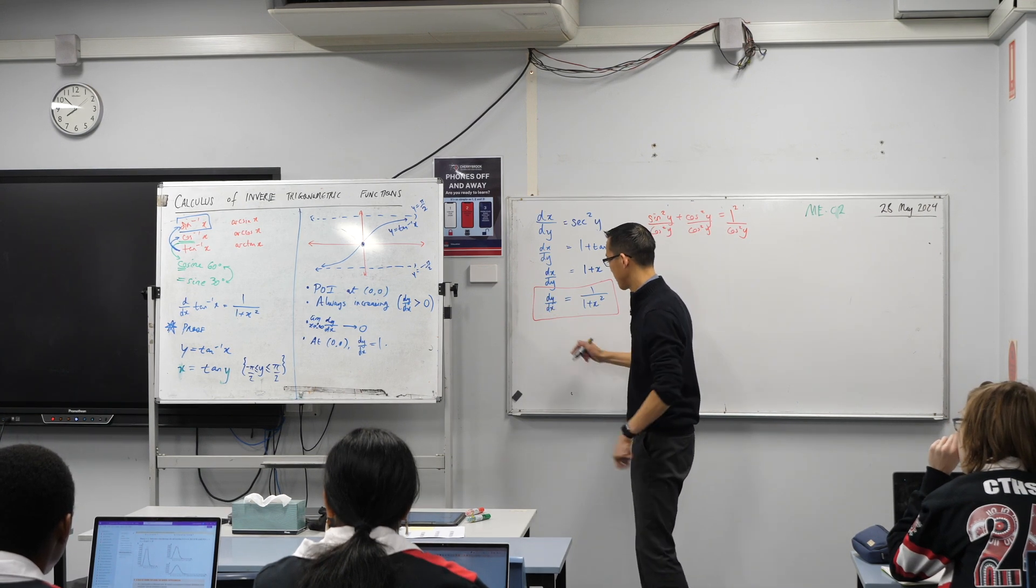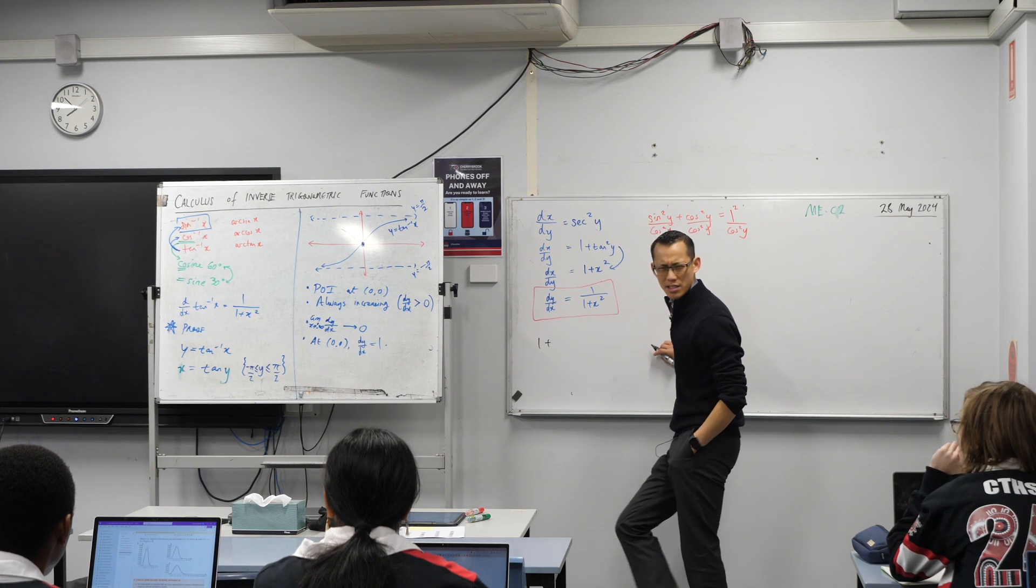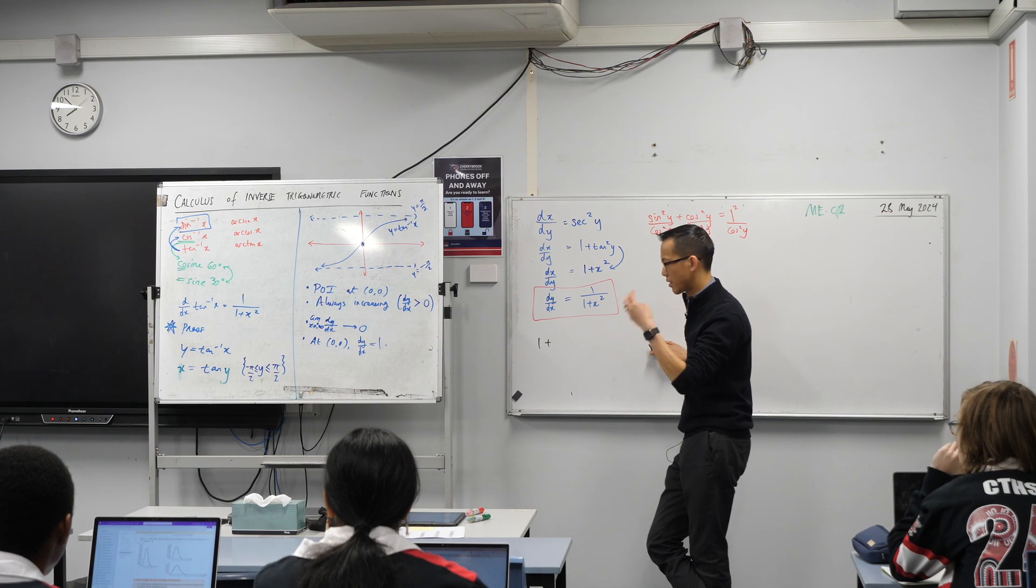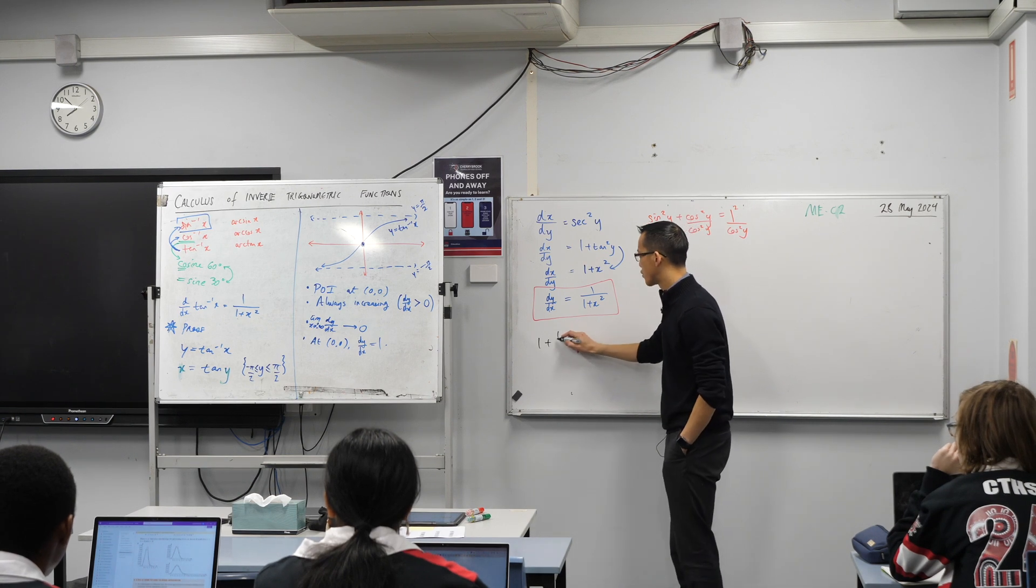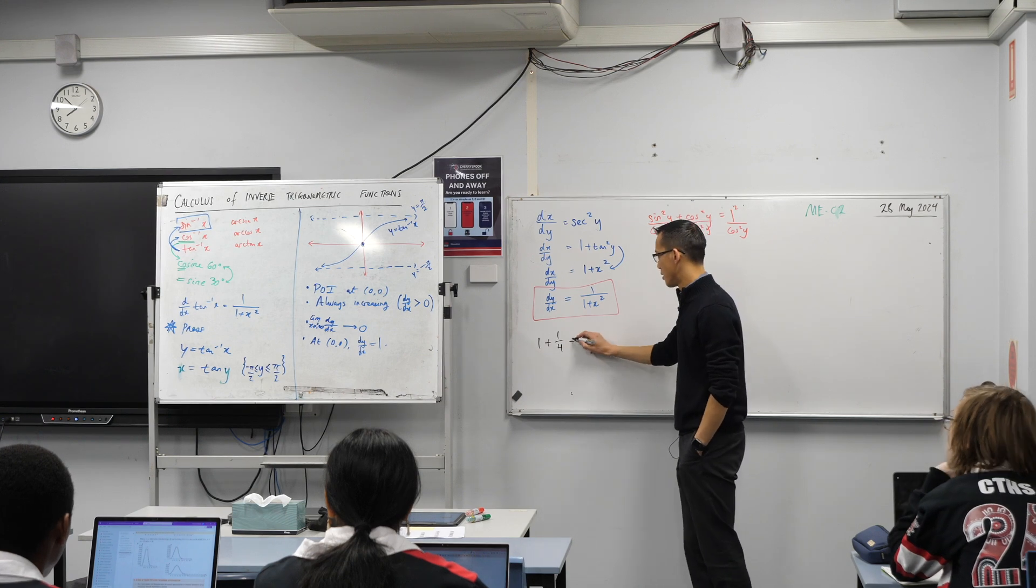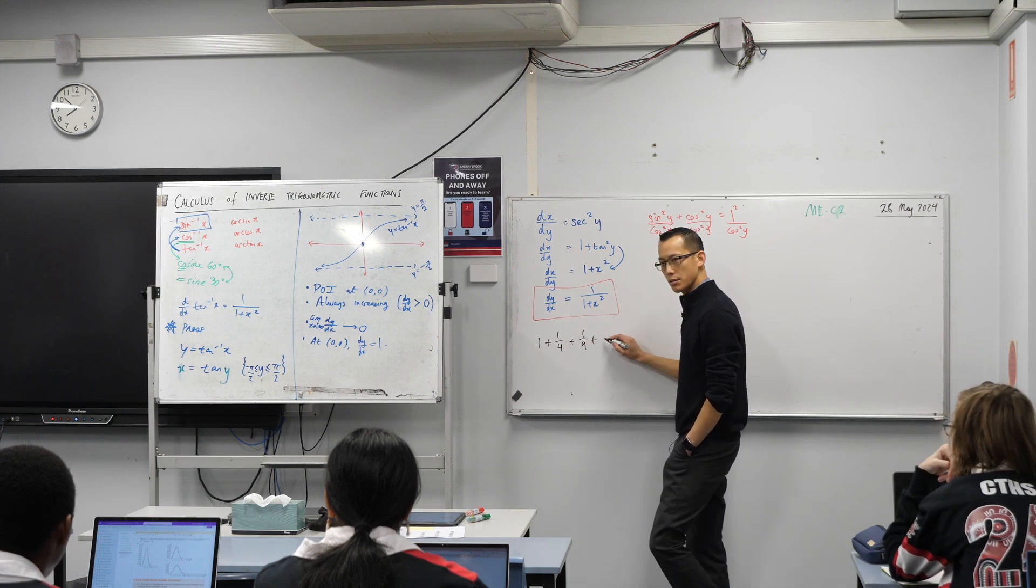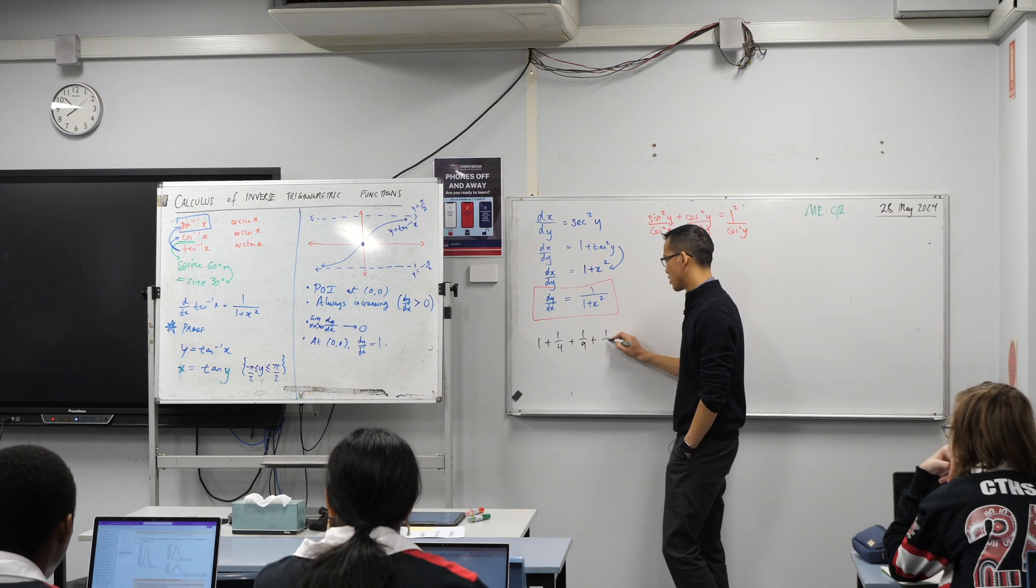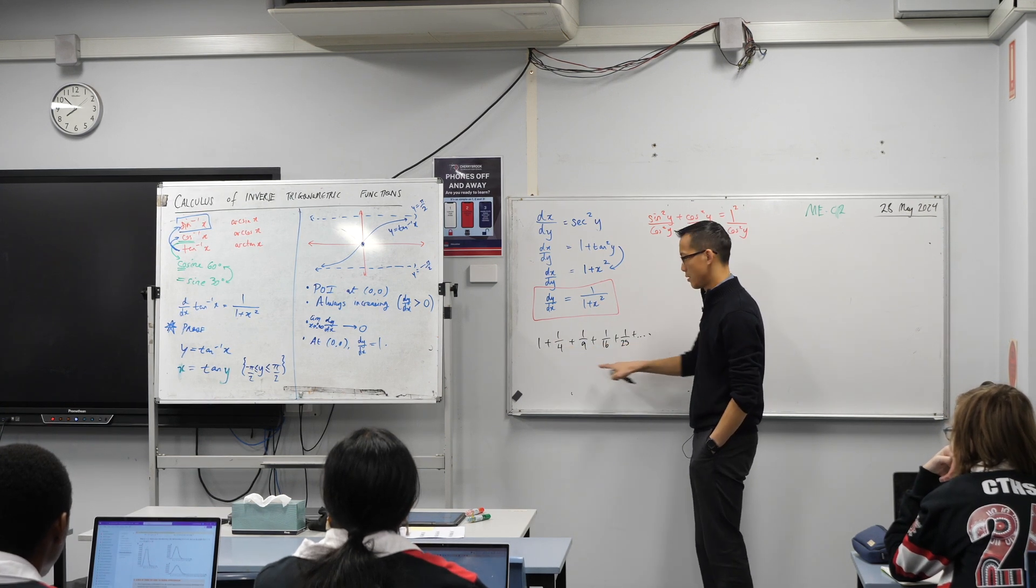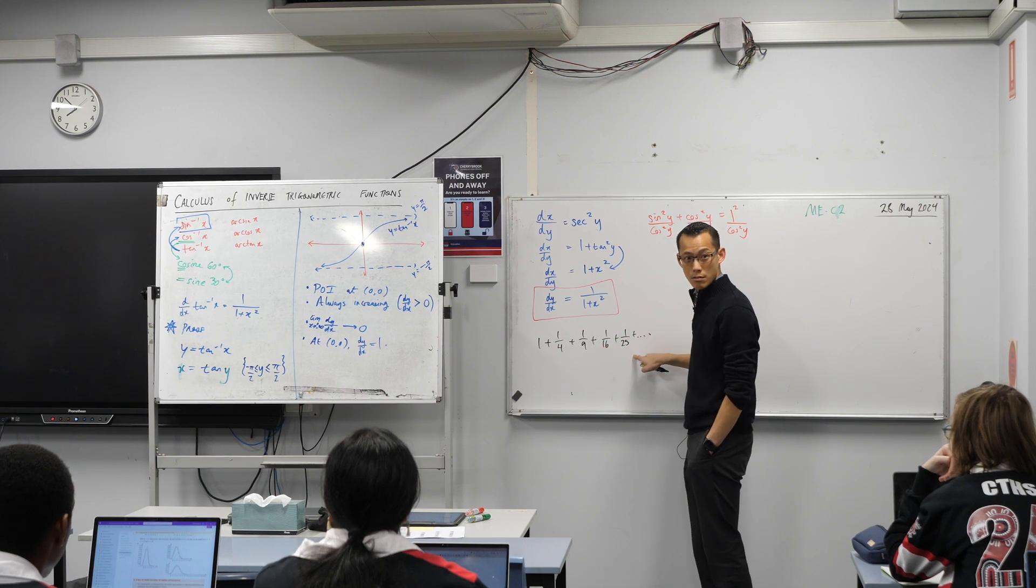If I had a, you guys have done series haven't you? You've done infinite series? Arithmetic progressions, geometric progressions, all that kind of thing. Let me give you a series just real quick. One plus a quarter plus a ninth, what would you guess is coming next? One sixteenth, what would you guess is coming next? One over twenty-five, so what this is, is an infinite series made of the reciprocals of the squares. The reciprocals of the squares, okay?